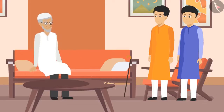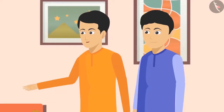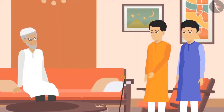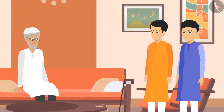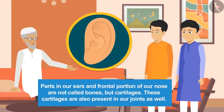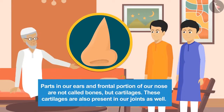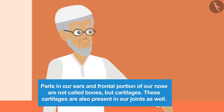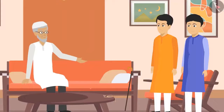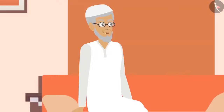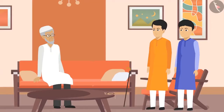Chacha asked why the bones of the ears are so flexible. The students explained that ear bones are flexible but not as strong as other bones, and similar bones are found in the frontal part of the nose. Chacha clarified that these parts are not called bones but cartilages, and cartilages are also present in joints. He was extremely happy with both students and said they had passed his exam with full marks — training would begin the next day.